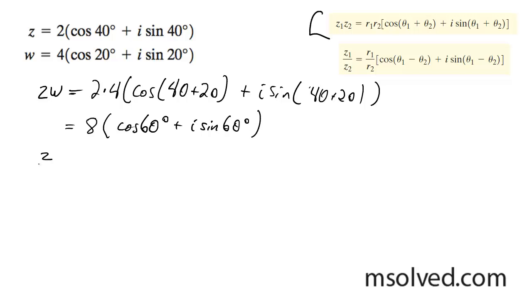And for Z divided by W, we're going to get 2 divided by 4, and then cosine of 40 minus 20 plus i sine of 40 minus 20.